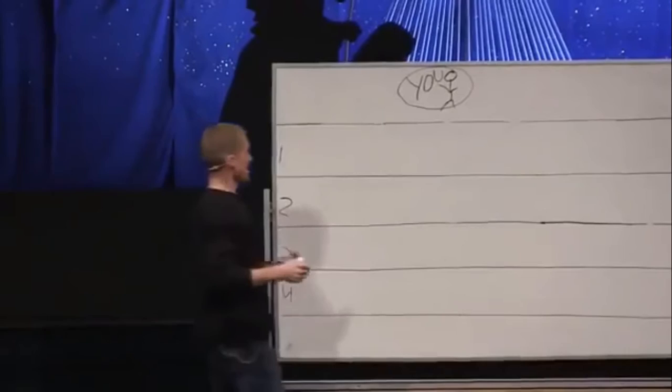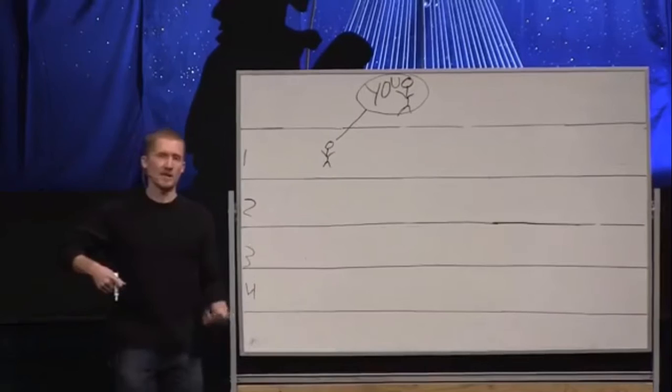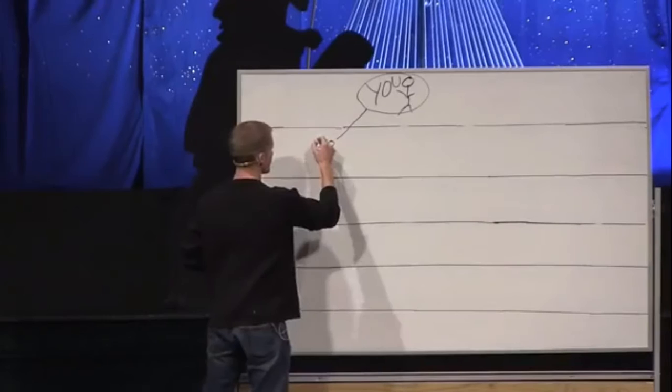So let's say year number one, I disciple a guy named Alex. I just put my arm around him, teach him Jesus' commands, teach him how to follow Jesus, how Jesus taught us to live. Year number one, I disciple Alex for a year.